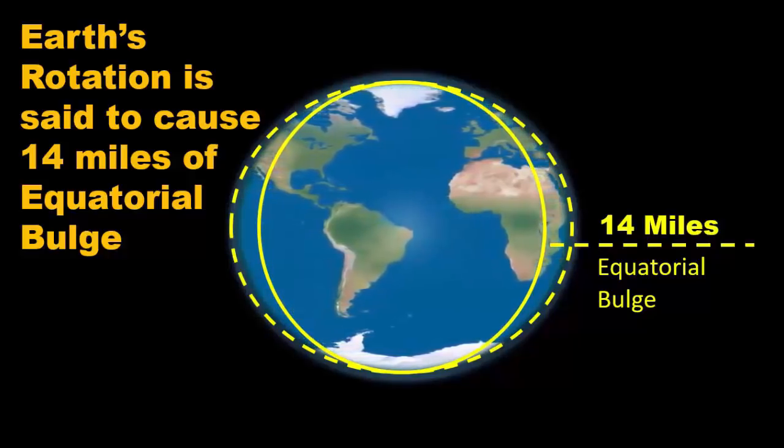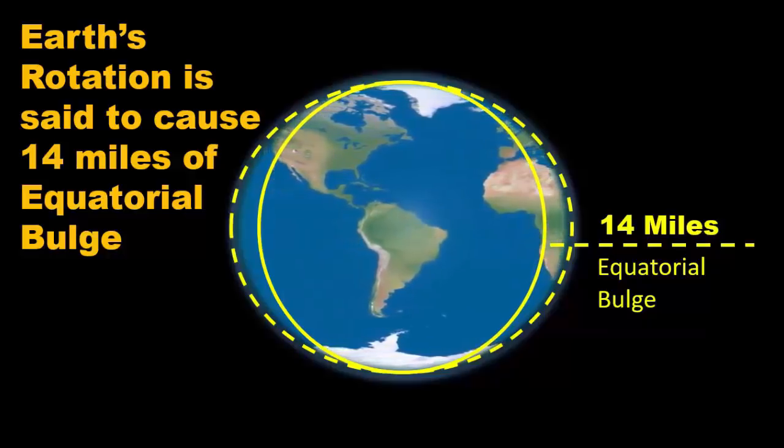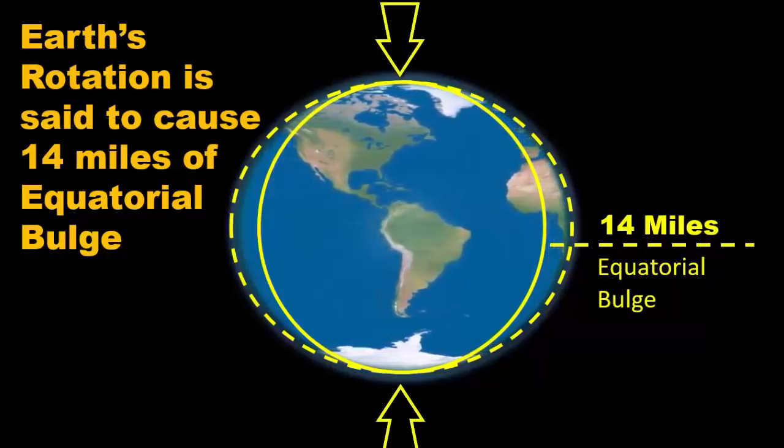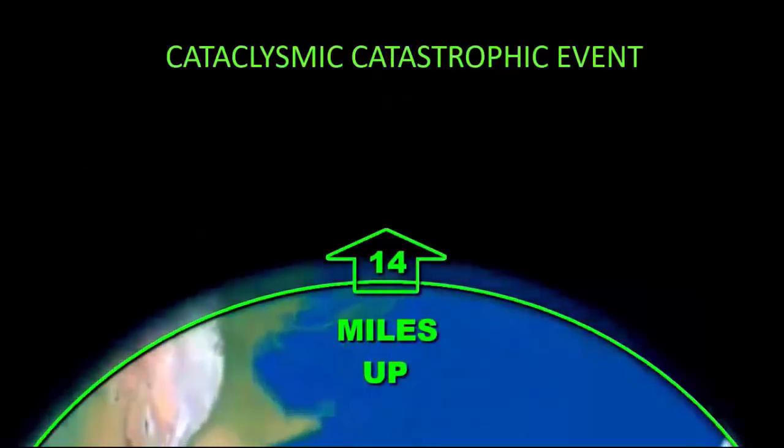Not only is the equator bulging, but from pole to pole, the centrifugal force is causing that to squash. So all of this is said to be going on underneath us. All this ground, rock, dirt, and what have you, moving toward the equator.